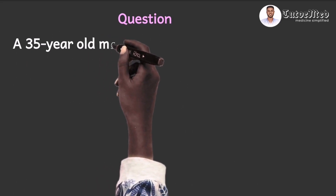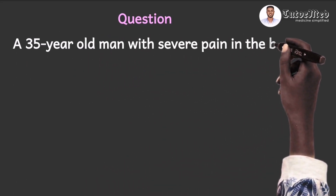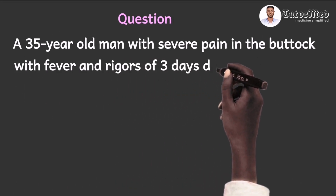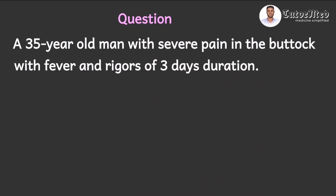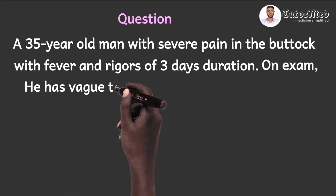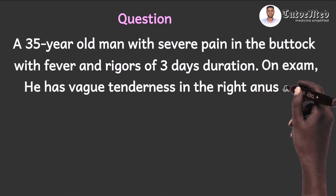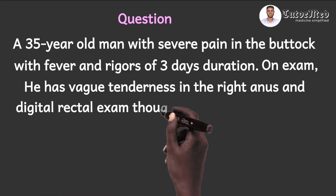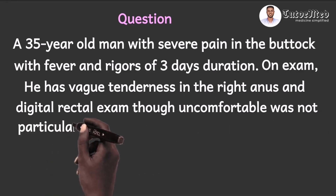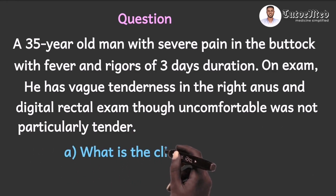A 35-year-old man came with severe pain in the buttocks, with fever and rigors of three-day duration. On examination, he has vague tenderness in the right side of the anus, and digital rectal examination, though uncomfortable, was not particularly tender. The first question says: what is the clinical diagnosis?